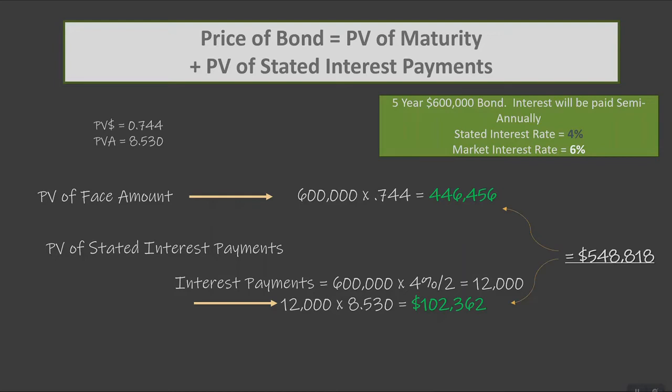A quick check on bonds: if you're selling a bond at a discount — which we've determined based on interest rates, since the stated rate is less than the market rate — then when we do our present values, if we've done them correctly, the present value of our bond should also be less than the maturity value of $600,000. So just a sanity check when you're looking at these problems: if you've got something larger than $600,000, then you know you're using the wrong present value factors.